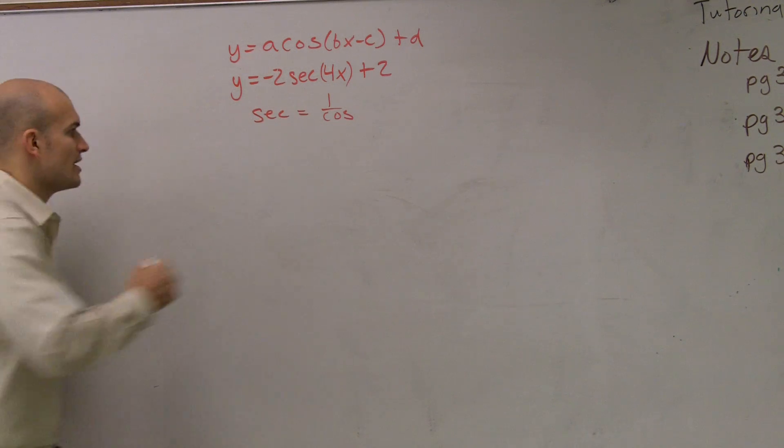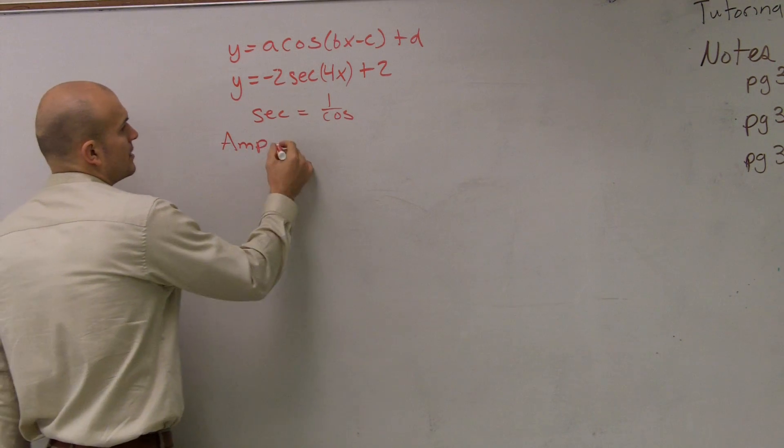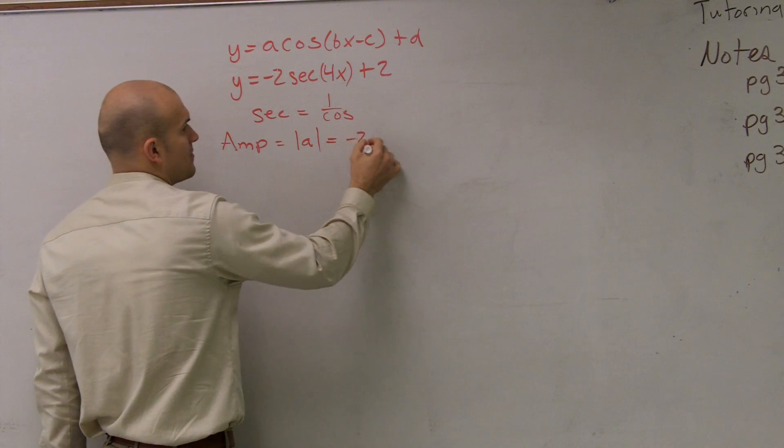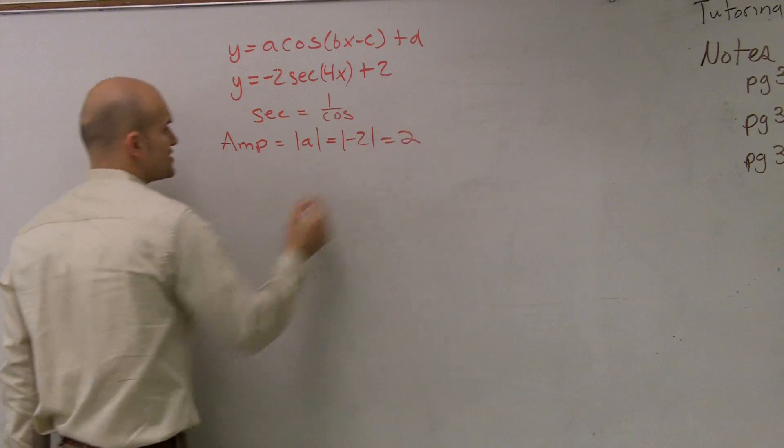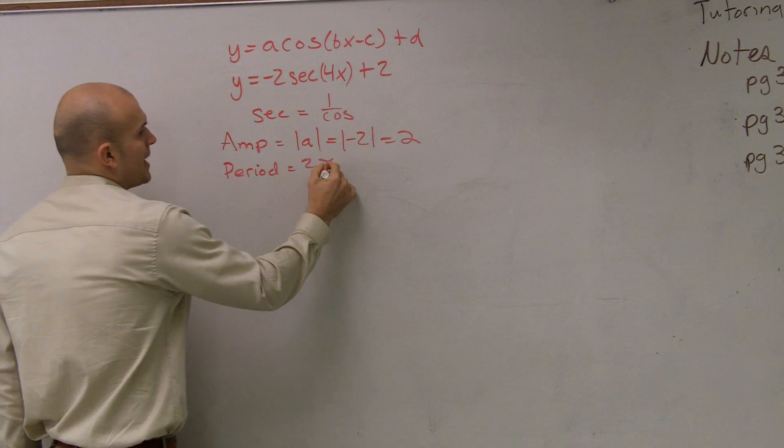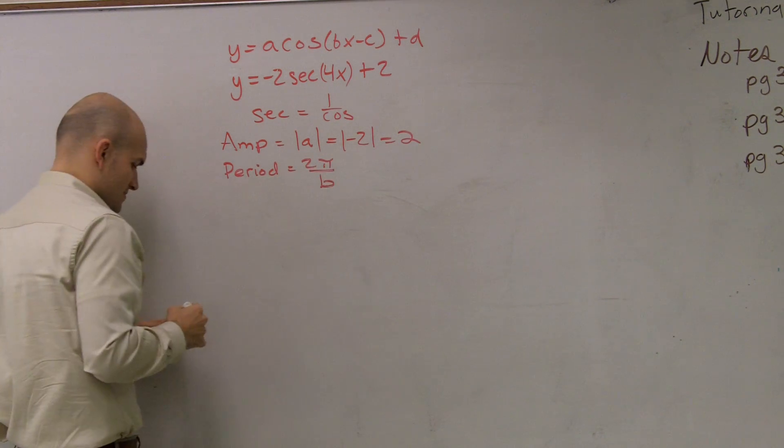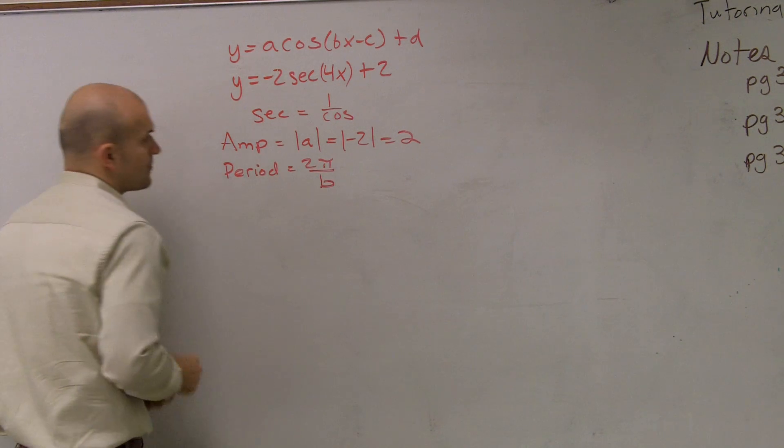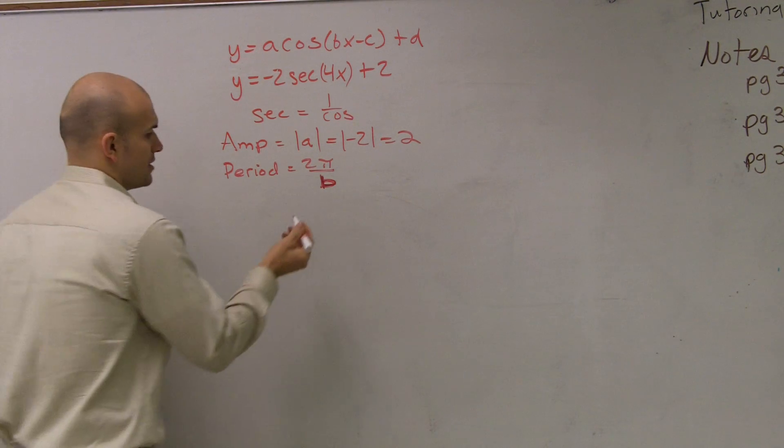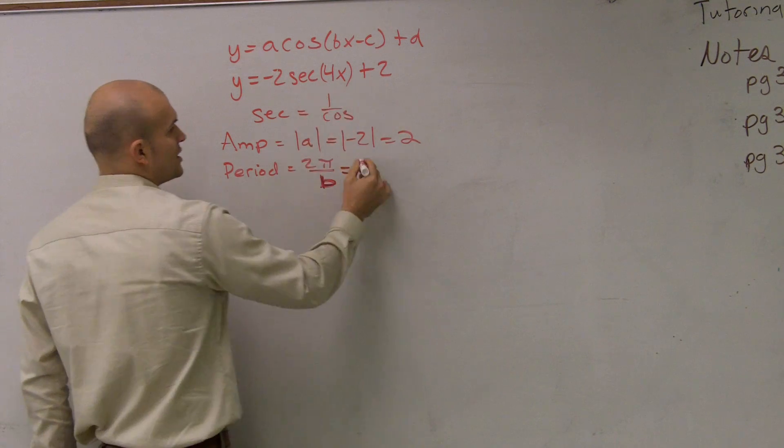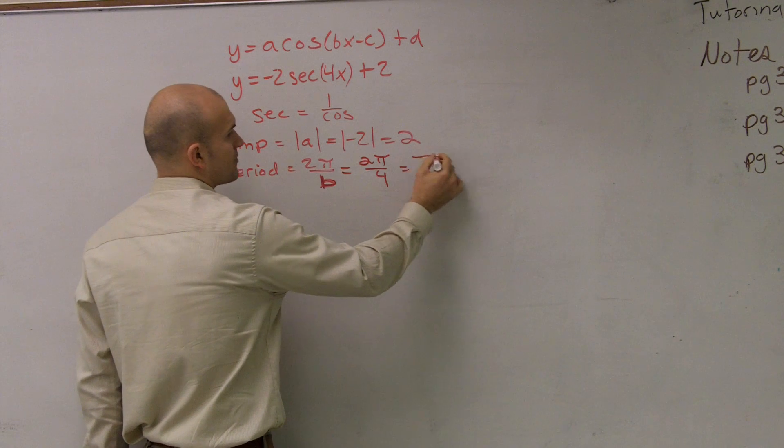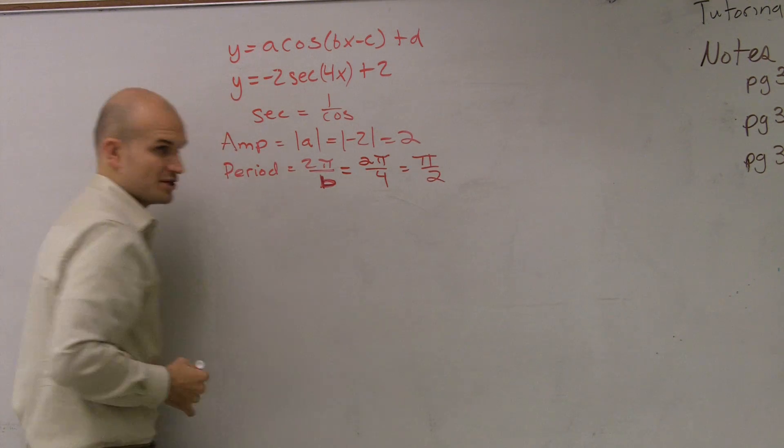Just make sure you're using a pencil or very faint dotted lines when you're doing this. Let's pretend it's cosine for right now. So if this is a cosine graph, I need to find the amplitude, which is the absolute value of a. Here we have the absolute value of negative 2, which gives us 2. We need to know what the period is, which is 2π over b, which here we have 2π over 4, which equals π over 2.